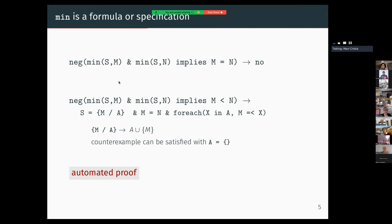If I call SetLog to compute the negation of this implication, the answer is no, meaning that there are no values of S and M that satisfy the formula. So we know for sure that the implication inside the negation is a property, is a theorem, is a lemma.